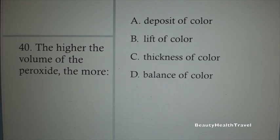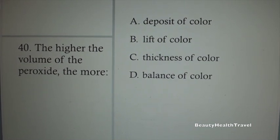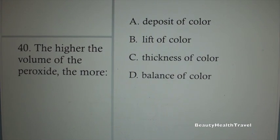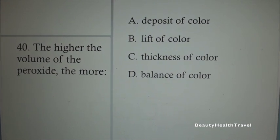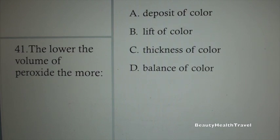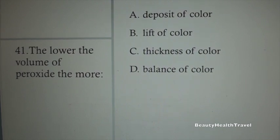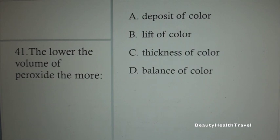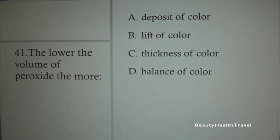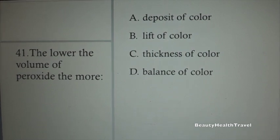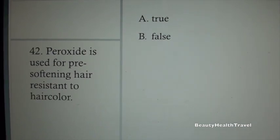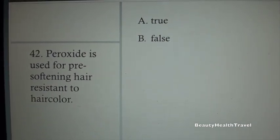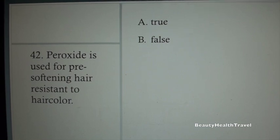Question 37: H2O2 stands for: A. Sodium hydroxide, B. Hydrogen peroxide, C. Carbon dioxide, D. Thiorelaxer. Question 38: Hydrogen peroxide is acid and has a pH between: A. 7.8 to 8.3, B. 9.0 to 10.1, C. 2.3 and 4.5, D. 13.0 to 14.0. Question 39: The strength of hydrogen peroxide is measured by: A. Volume, B. Letters, C. Meters, D. None of the above.